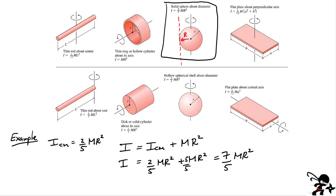For a one-dimensional bar, setting up the integral directly wasn't too bad. But for a sphere, it would be much more complicated. It's far more straightforward to apply the parallel axis theorem. That's it for me, folks. Thanks for watching.